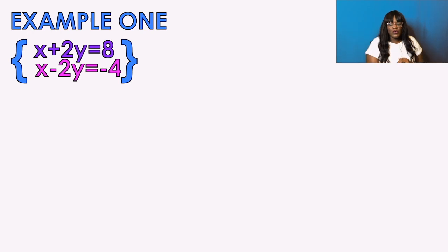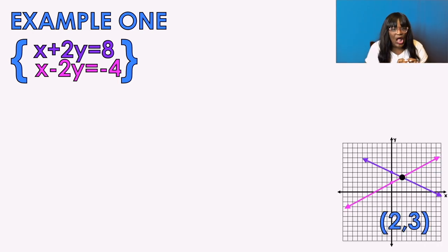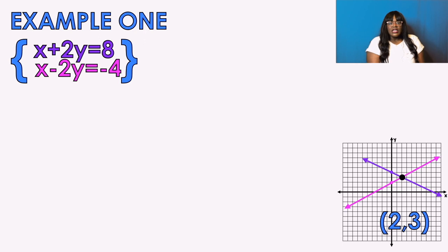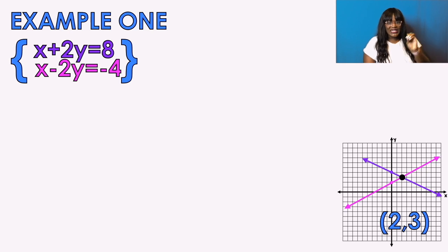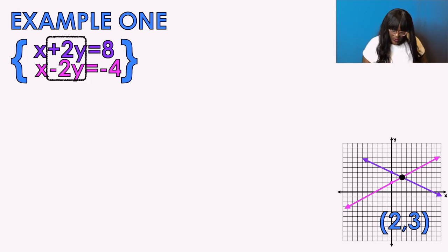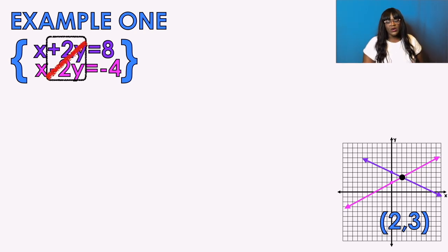Example number one — I always give my students the answers because I'm concerned with the process. First, you need to pick a variable: am I going to use the x's or the y's? In this example I'm going to choose the y's, because the coefficients of the y's are already opposites — one is positive, one is negative. They did the work for me.